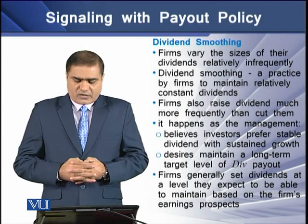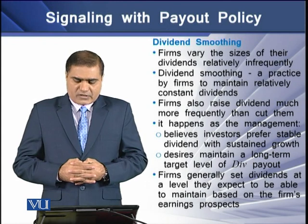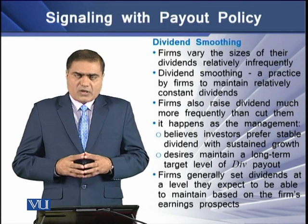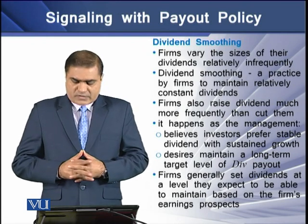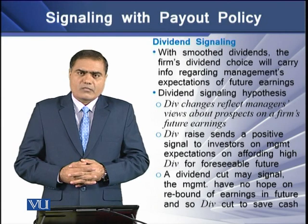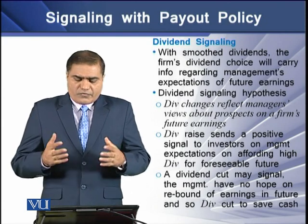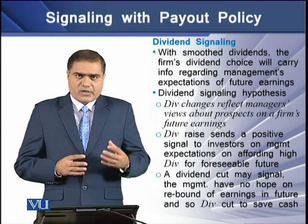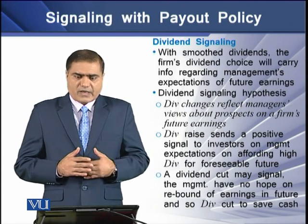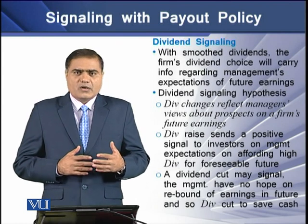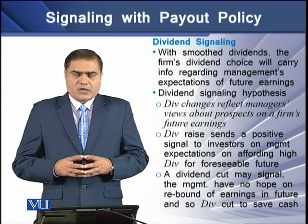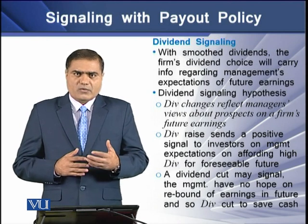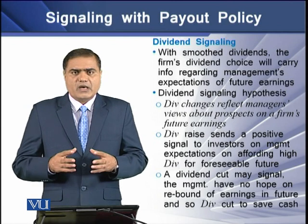Firms generally set dividends at a level they expect to be able to maintain based on the firm's future earnings prospects. With smooth dividends, the firm's dividend choice will carry information regarding the management's expectation on future earnings of the firm. This phenomenon gives rise to another phenomenon termed as the dividend signalling hypothesis.